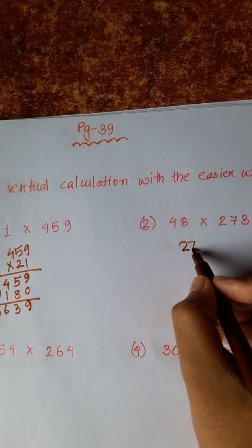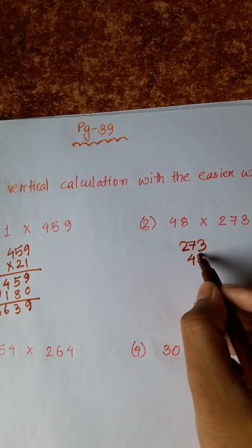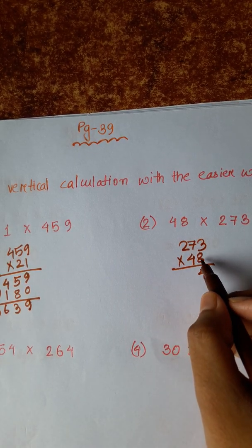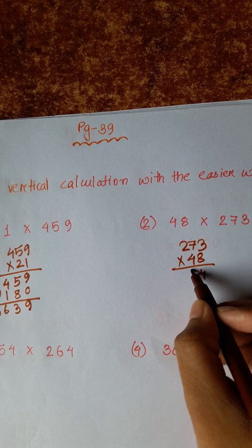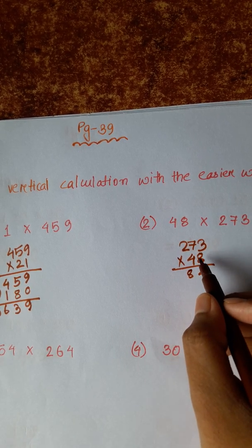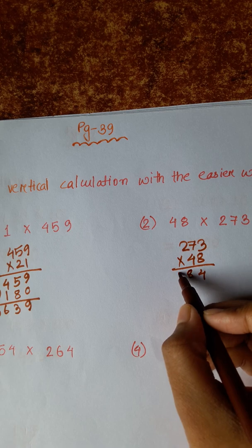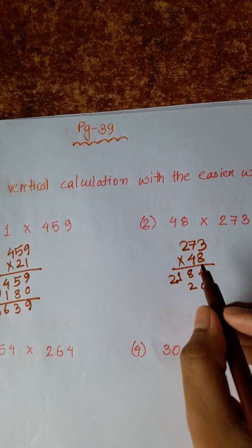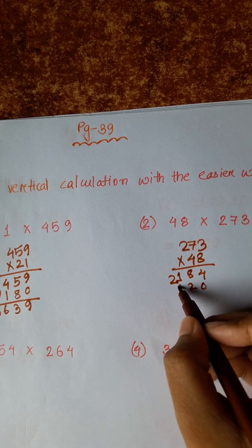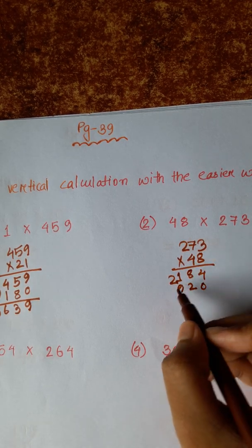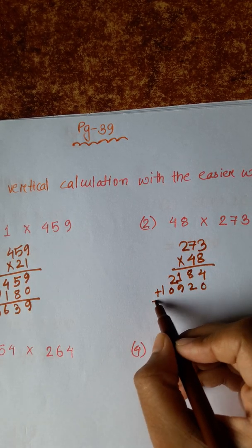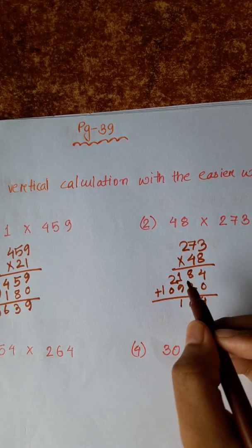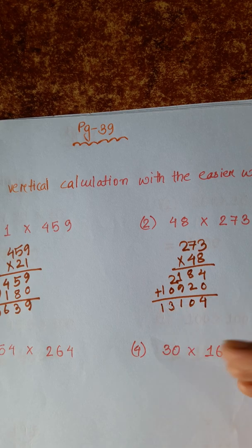Next: 8 threes are 24, carry 2. 7 eights are 56 plus 2 is 58, carry 5. 8 twos are 16 plus 5 is 21. 4 threes are 12, carry 1. 7 fours are 28 plus 1 is 29, carry 2. 4 twos are 8 plus 2 is 10. 8 plus 2 is 10, carry 1. 9 plus 1 is 10, carry 1. 1, carry 1. 2 plus 1 is 3 and 1.